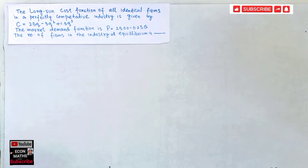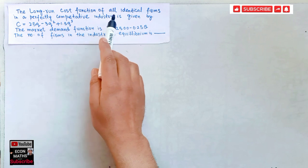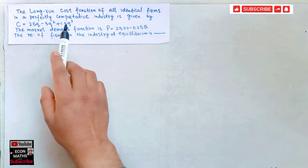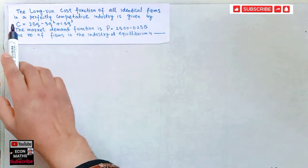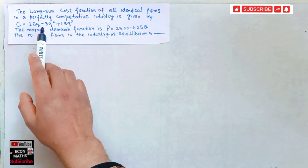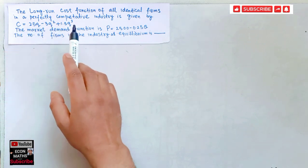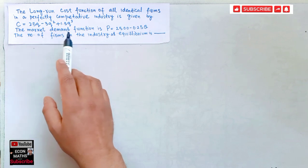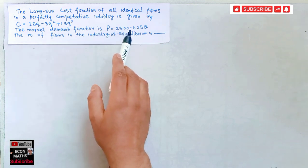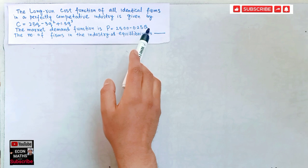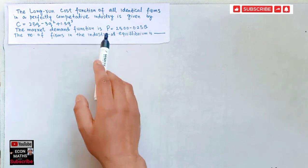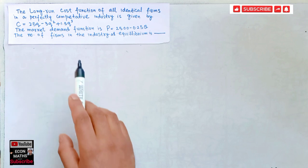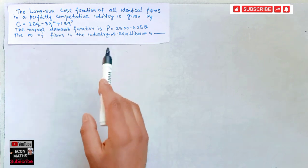In this video, we will try to solve some of the numerical questions that were asked in the GATE Economics paper of 2021. The first question is: the long-run cost function of all identical firms in a perfectly competitive industry is given by: Cost = 25q − 3q² + 1.5q³. The market demand function is given by P = 2500 − 0.25Q, where Q is the total quantity and P is the price. We have to find the number of firms in the industry at equilibrium.